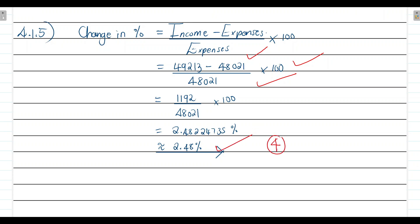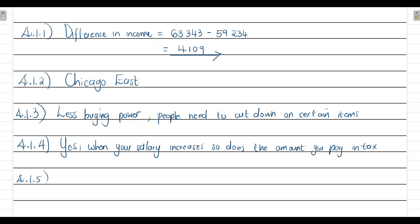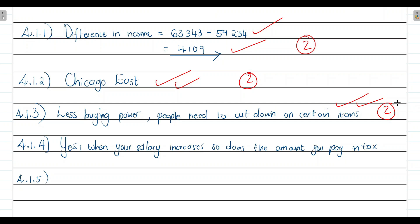For Question 4.1.1, you get one mark for subtracting the values and one mark for the final answer — out of two. For 4.1.2, you get two marks for correctly identifying Chicago East. For 4.1.3, you get two marks for any reasonable explanation. For 4.1.4, you get one mark for saying yes and one mark for explaining that when your salary increases, so does the amount you pay in tax — out of two.